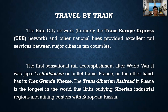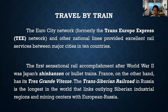The EuroCity Network, formerly the Trans-Europe Express Network, and other national lines provided excellent rail services between major cities in 10 countries. The first sensational rail accomplishment after World War II was Japan's Shinkansen, or bullet trains. France has its Très Grande Vitesse, and the Trans-Siberian Railroad in Russia is the longest in the world, linking outlying Siberian industrial regions and mining centers with European Russia.